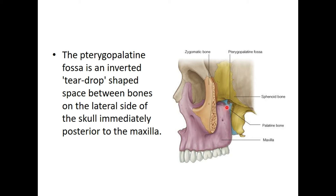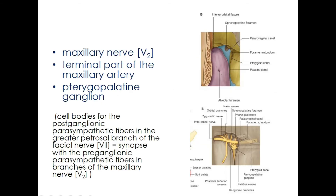The contents of the pterygopalatine fossa are: the maxillary nerve, which is the second division of the trigeminal nerve; the terminal part of the maxillary artery; and the pterygopalatine ganglion, which is a parasympathetic ganglion shown here as the yellow-colored structure. This ganglion is important because it contains the cell bodies of postganglionic parasympathetic fibers of the greater petrosal branch of the facial nerve.